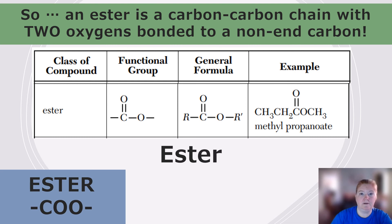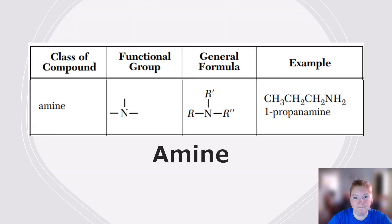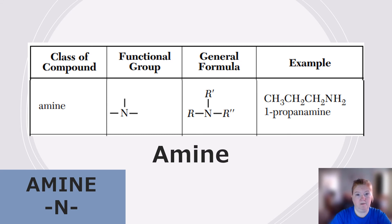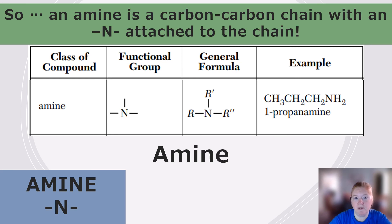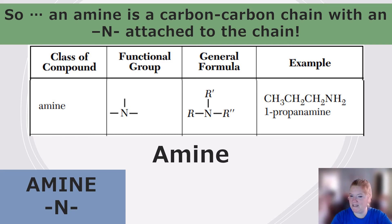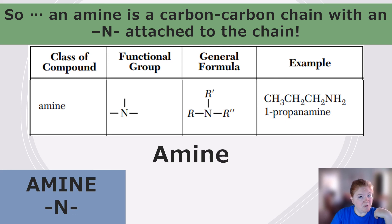Amine: nitrogen forms three bonds, not four like carbon. An amine is a carbon chain with a nitrogen attached — it could be on carbon one or carbon four. So there is an address. Most of the time in this class it's at the end, but not always. If the nitrogen is not on the end carbon, you must use the correct address number.